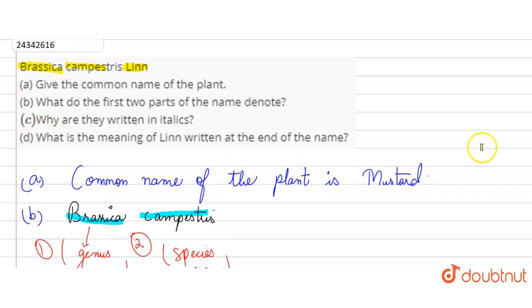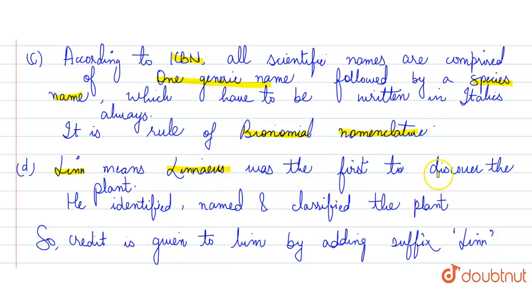So, D part of our explanation is this. Lin means Carolus Linnaeus was the first to discover the plant. He identified, named and classified the plant. So, credit is given to Lin by adding the suffix Lin.